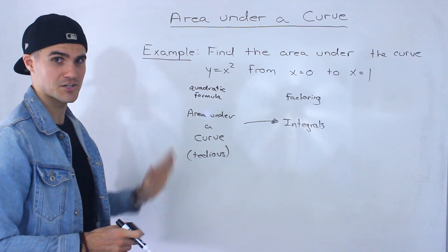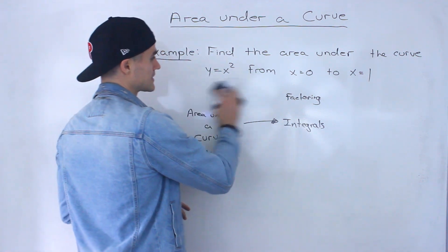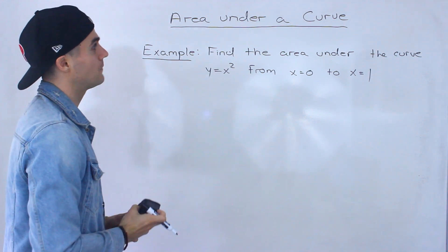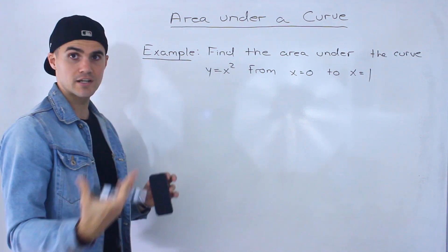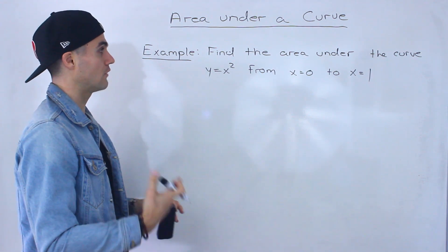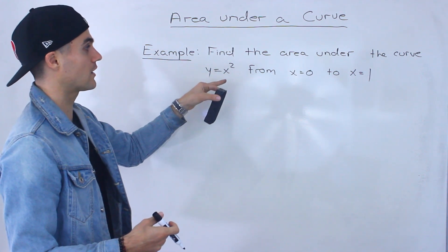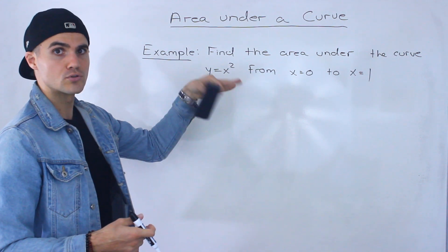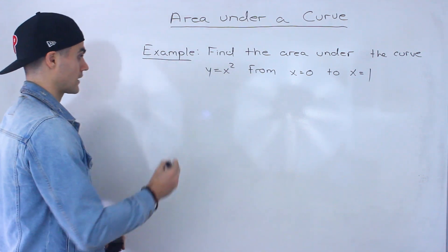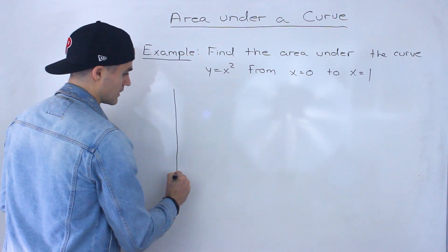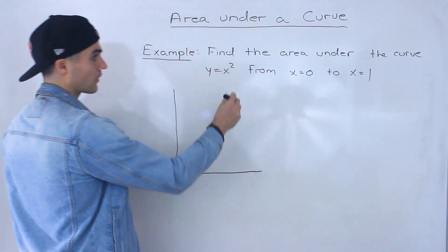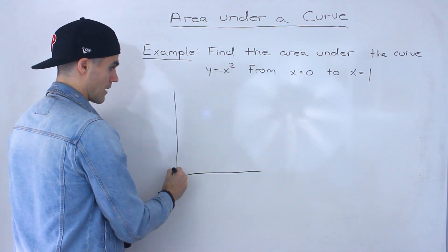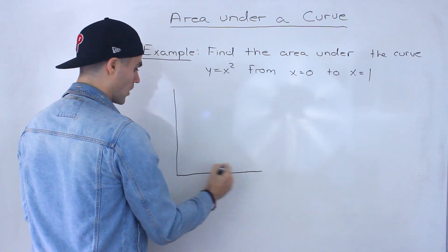So just as a heads up, this next section is going to be a lot to get through, a lot of details, but I'm going to try my best to explain it as clearly as possible. Let's jump straight into an example of how this all works. We've got to find the area under the curve y equals x squared from an x value of 0 to an x value of 1.